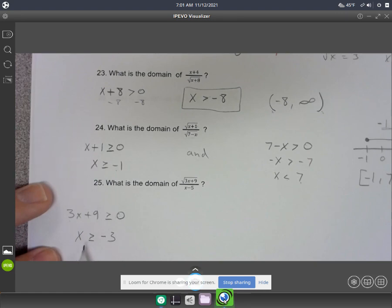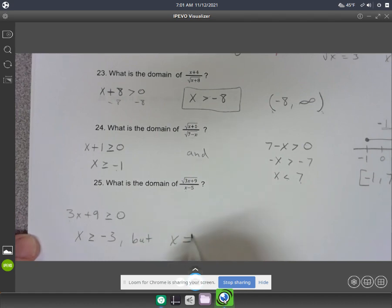So, x has to be bigger than negative 3. But, again, on this one you cannot include the number 5. So, x cannot equal the number 5. Because that would cause a division by 0 in the bottom. So, you can choose any number after negative 3 to plug in. But it cannot equal 5.